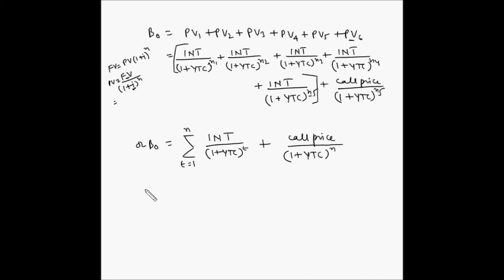In our example, pv0 is 950, sigma t is equal to 1 to n, n is 5, interest amount is 100 divided by 1 plus ytc to the power t, plus now call price is 1050 divided by 1 plus ytc to the power 5.